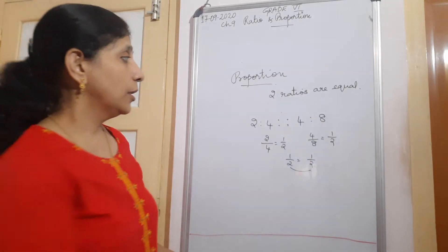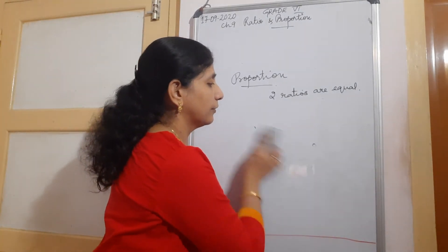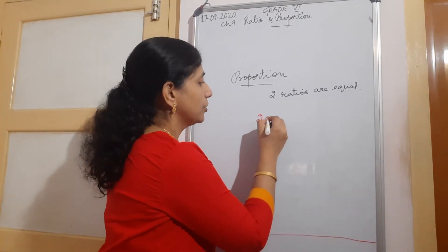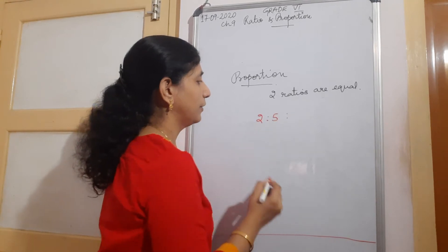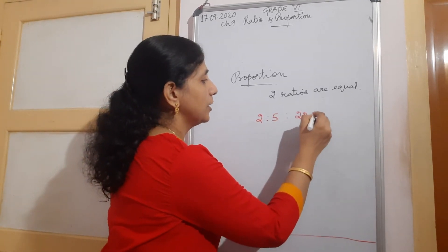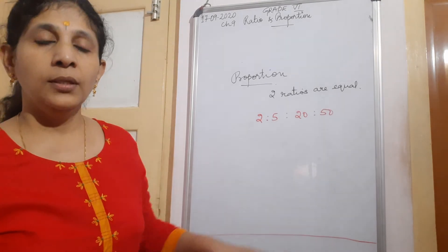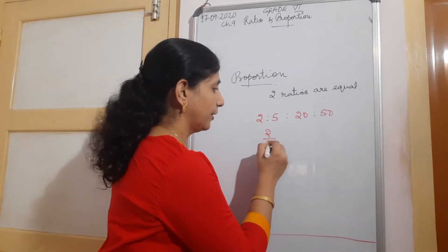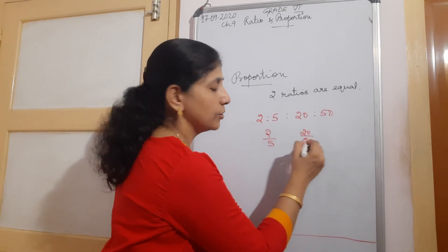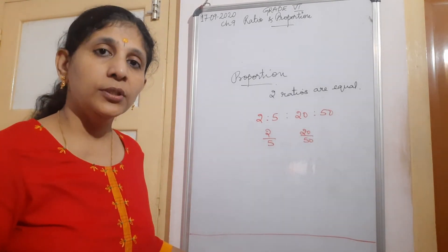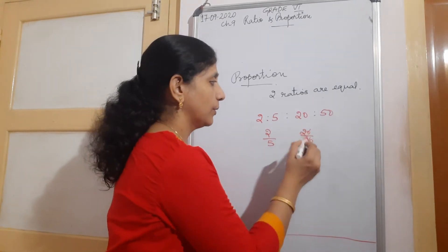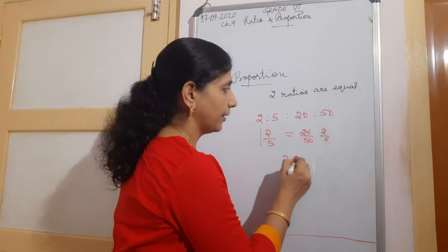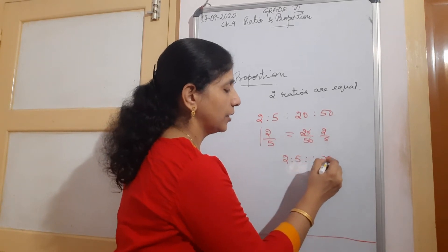Another example: is 2 ratio 5 in proportion with 20 ratio 50? This is 2 by 5. And 20 by 50 - cancel the common factor, zeros cancel, it equals 2 by 5. Both are equal, so 2 ratio 5 is in proportion with 20 ratio 50. Equivalent ratios are called proportion.